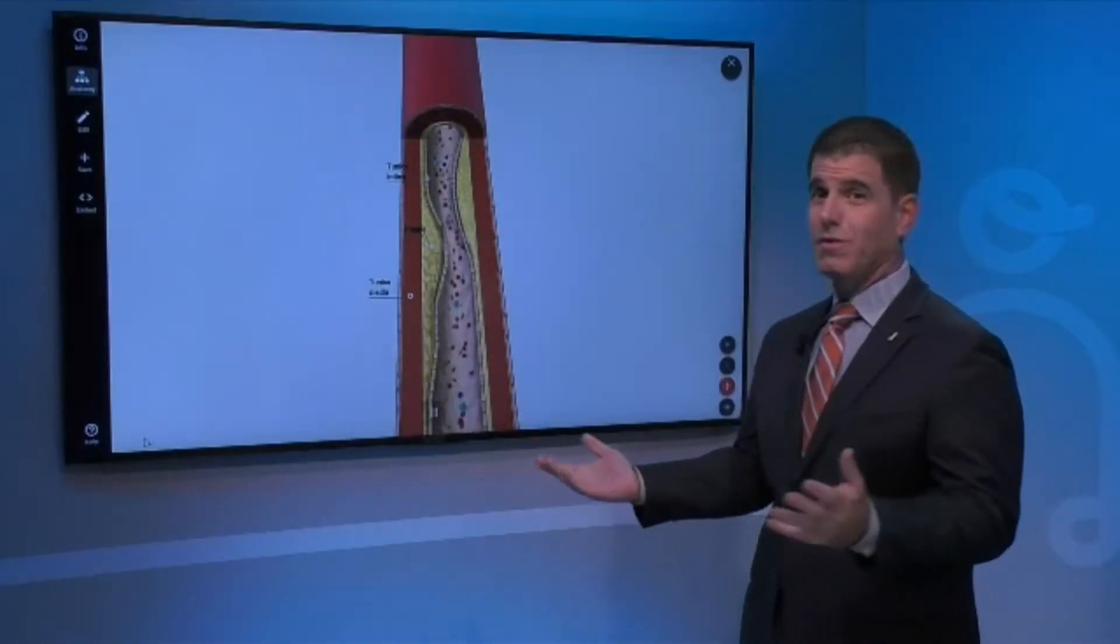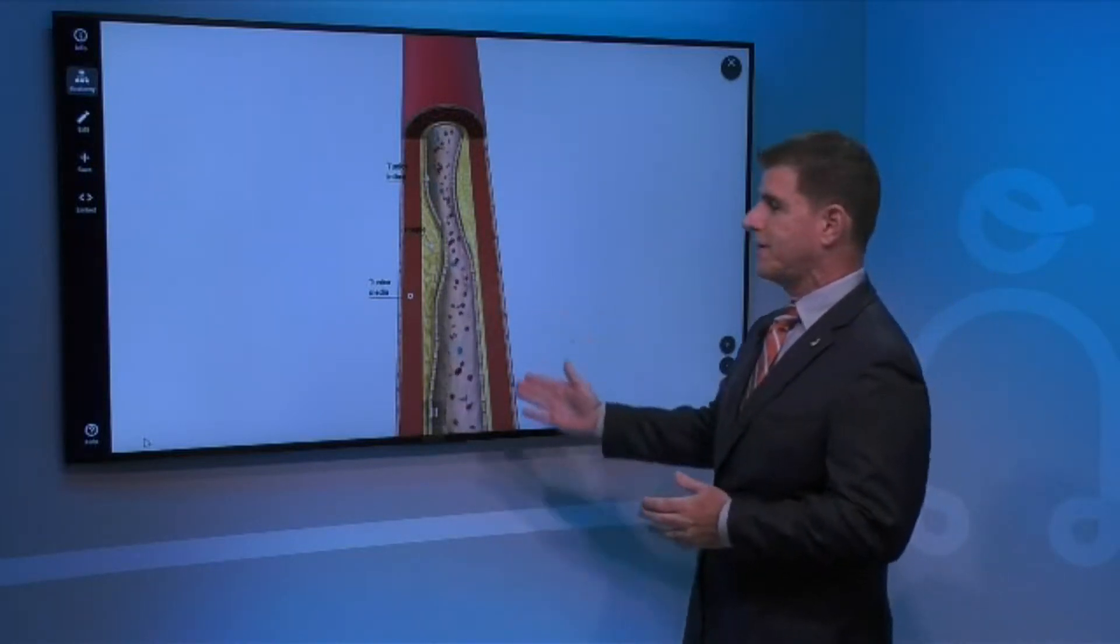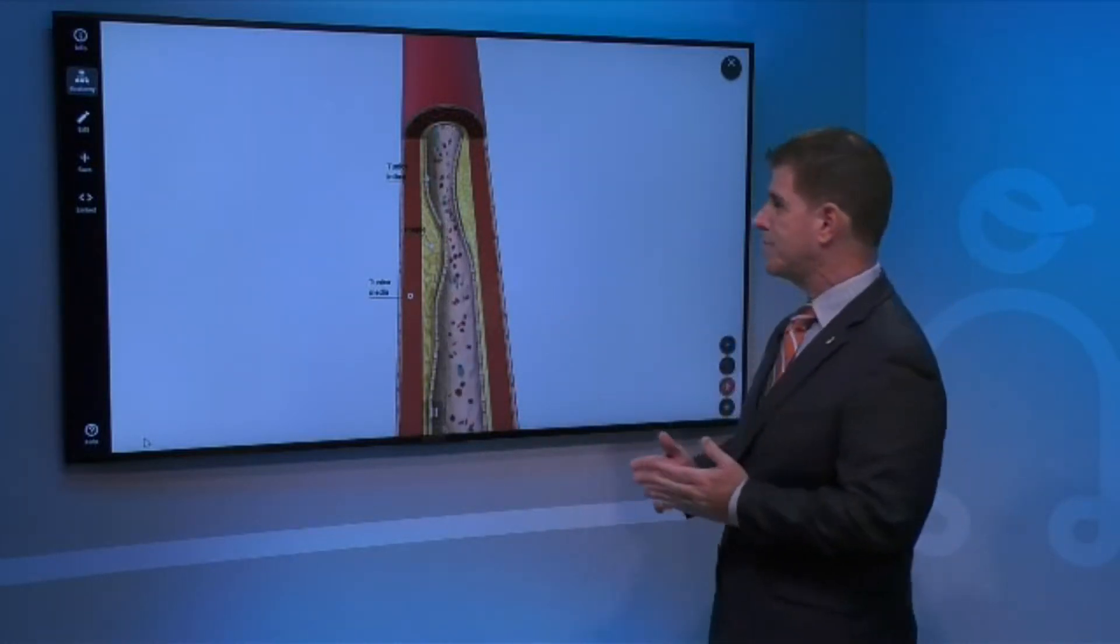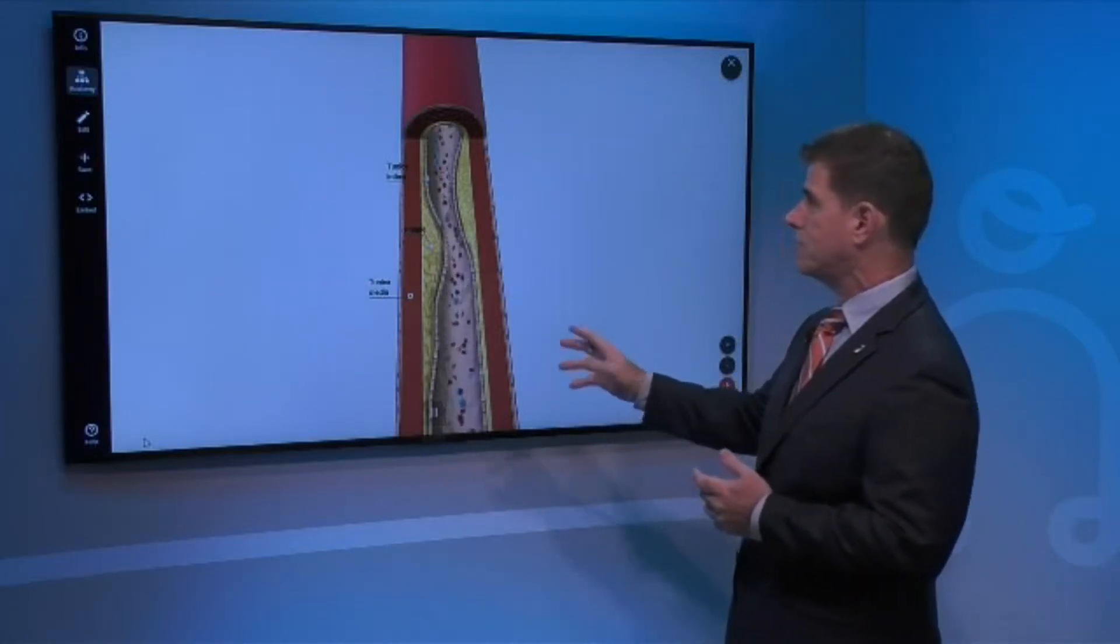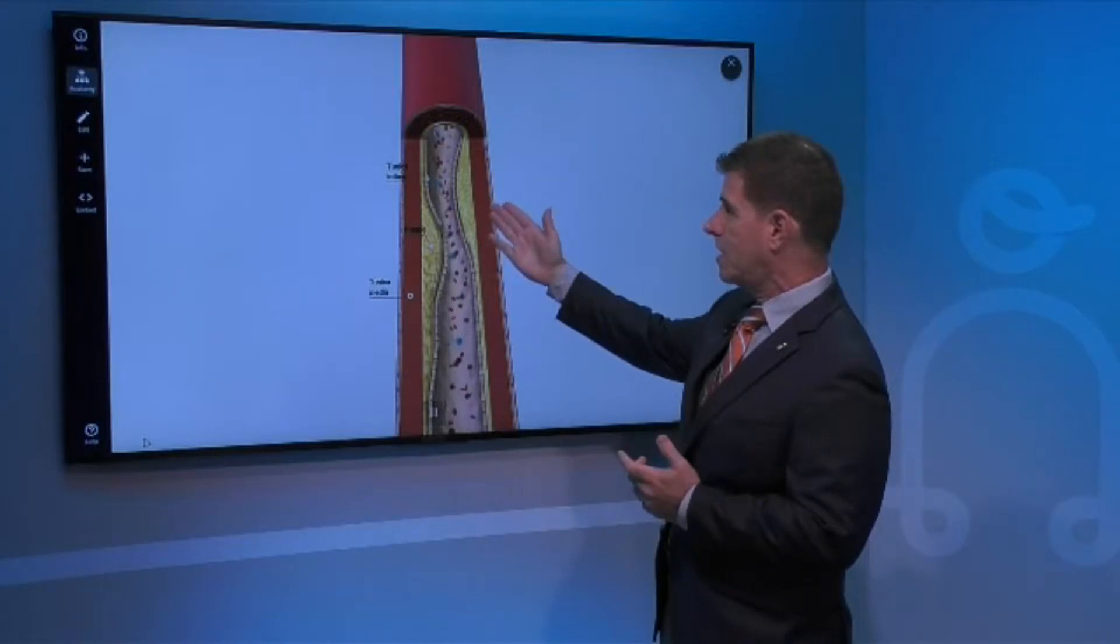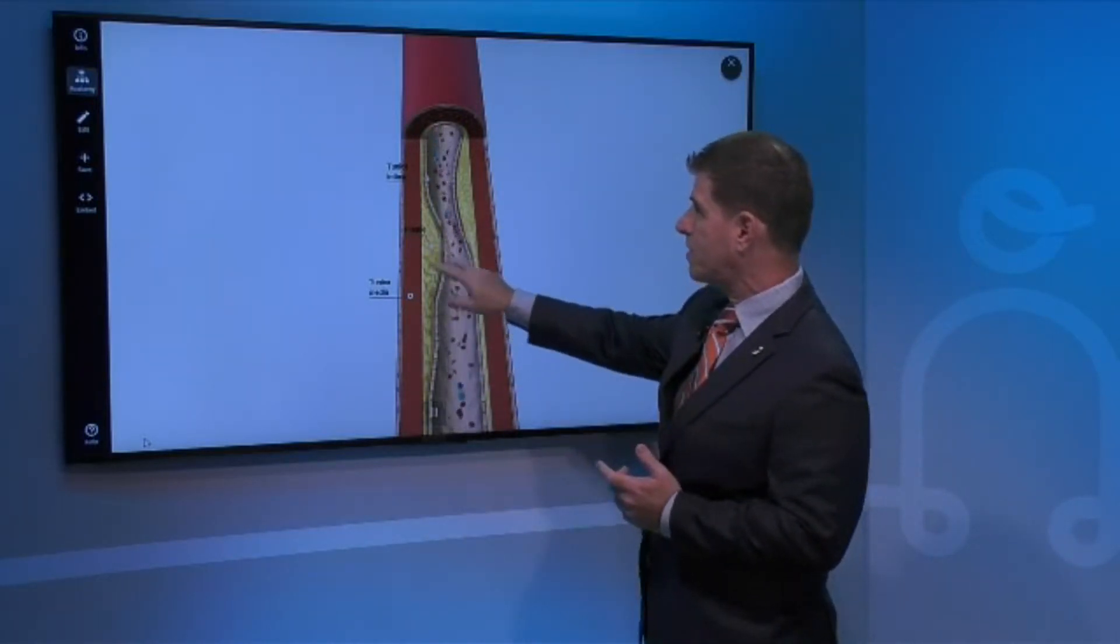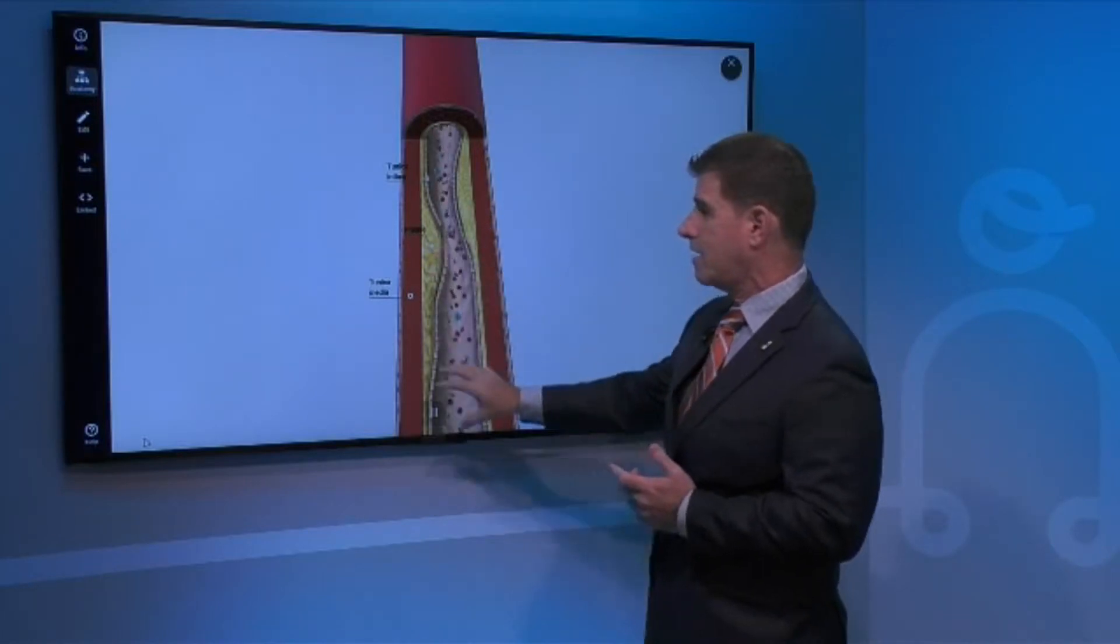So this is a blood vessel in any body part, to be quite honest. This is just an animation that can simply explain what can happen to an artery. Arteries are structural. This is like a hose that's been cut open for animation purposes, and you can see here how the yellow part is plaque and plaque buildup.